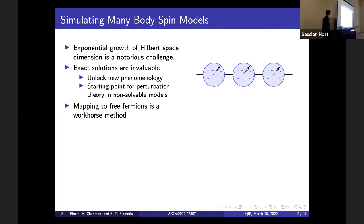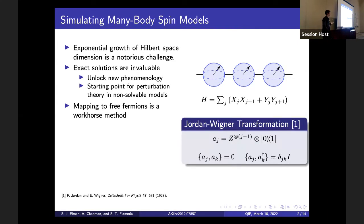A workhorse method for exact solutions to spin models is mapping to free fermions. For example, if I have a one-dimensional spin model like the 1D XY model on a nearest-neighbor spin chain, the conventional way to solve this would be to use the Jordan-Wigner transformation. The Jordan-Wigner transformation takes each term in the Hamiltonian and maps it to a quadratic in the Majorana raising and lowering operators. These operators look like off-diagonal matrix elements together with a string of trailing Z Pauli operators, and they satisfy the canonical anti-commutation relations for fermions.